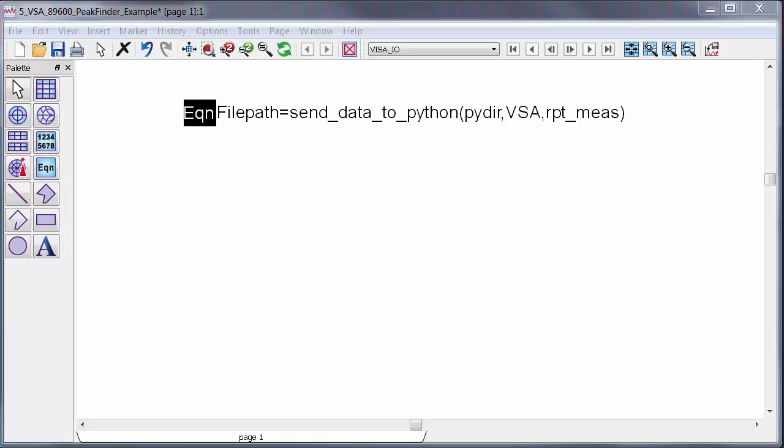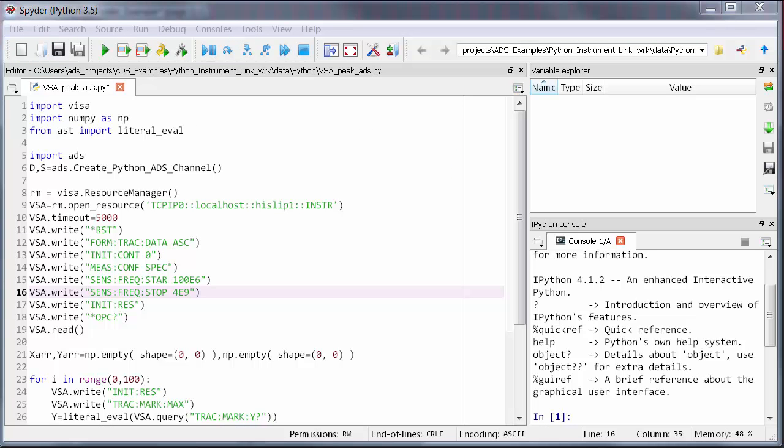All I have to do to make this happen is to use the process that I described in the data link basics video. So first, I'll send data from ADS to Python by doing send data to Python from the ADS data display, and I'll pass in the VSA address string and the number of times to repeat the measurement. This is arbitrary. In fact, I could pass any data in that I wanted to. To access this data in Python, just add two lines to the script.